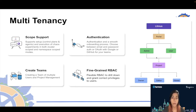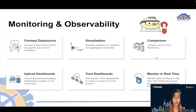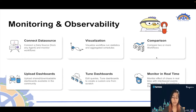Scope support is also there — you can install it in namespace or cluster-wide scope. For authentication, you can choose local authentication or OAuth. For monitoring and observability, you can connect your own data source and monitor workflows, visualize workflow run statistics and schedule statistics, compare two or more workflow runs, upload your own community dashboards, and monitor chaos in real time with interleaved events and metrics from a Prometheus data source.